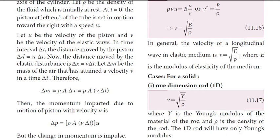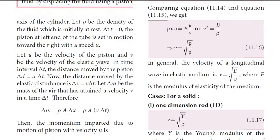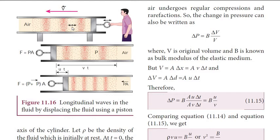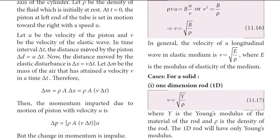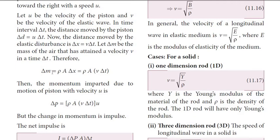The distance moved by the elastic disturbance is delta-x equal to v into delta-t. The mass of the fluid element is given by: mass equals density times volume, where volume equals area times displacement of the elastic medium, so mass equals rho times A times v into delta-t.